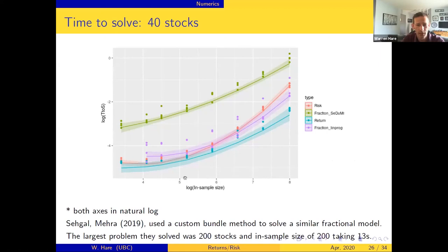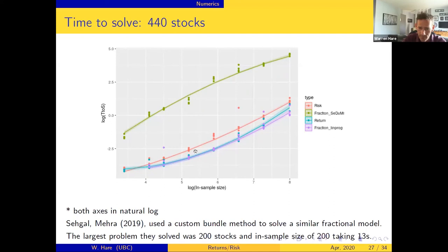Here's our time to solve chart. Notice there's a log scale on both axes - this log is in the natural logarithm, which means that this line right here is about 200 stocks, or sorry, an in-sample size of about 200, making it on par with Segal and Metra's approach, although we're only using 40 stocks and they use 200. This log right here says that even in the very worst case we took under a second to solve it, but more importantly in the smaller cases we're looking at e to the negative 4 seconds - it's very very fast, we're talking about thousands of a second.